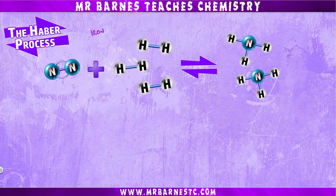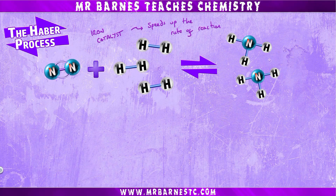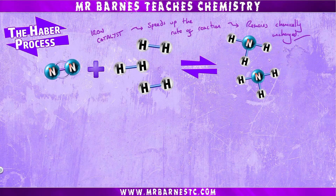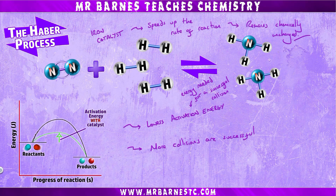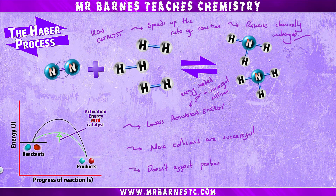Finally, we use an iron catalyst in the Haber process. A catalyst speeds up the rate of reaction but remains chemically unchanged at the end — it doesn't get used up and is not actually part of the reaction. It does this by lowering the activation energy, which is the energy required for any collision to be successful, so more collisions are successful and the rate of reaction speeds up. Importantly, a catalyst doesn't affect equilibrium in any way — it doesn't shift it left or right — but you will be getting your ammonia produced much quicker.